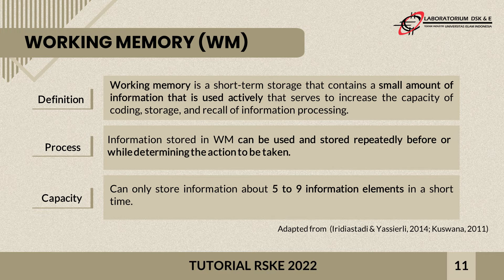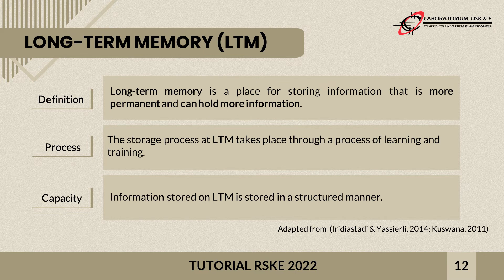Working memory is a short-term storage that contains a small amount of information used actively, serving to increase the capacity of coding, storage, and recall of information processing. Information stored in working memory can be used and stored repeatedly before or while determining the action to be taken. Its capacity can only store about five to nine information elements at a time.